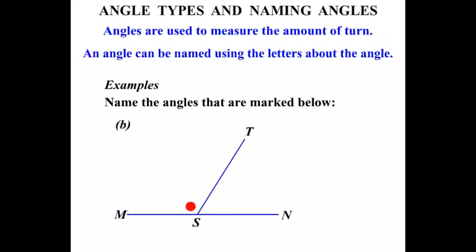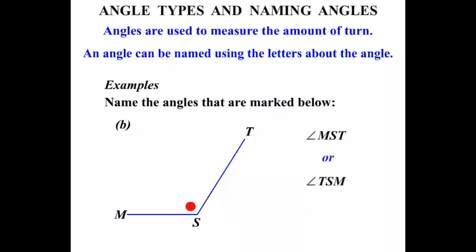For the next example, we name the angle marked with the red dot. We can call it Angle MST — tracing from M towards S and then to T. Or we could go Angle TSM, starting from T towards S and then towards M. Either way, we've traced out the angle.